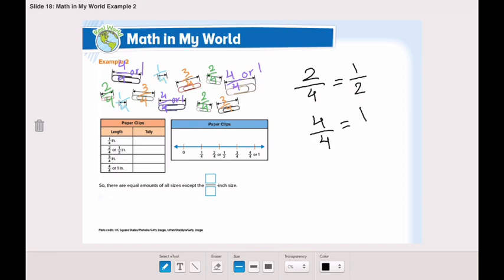Now we've measured all the paper clips. Let's put them in our tally chart. How many has one fourth? Let's count them together. One, two. So we will put two tally marks.